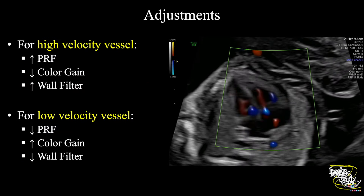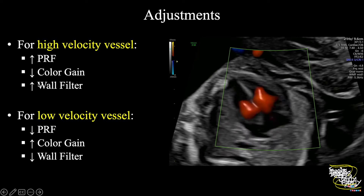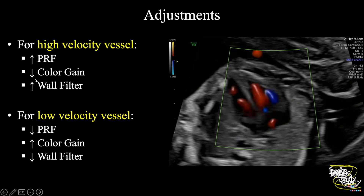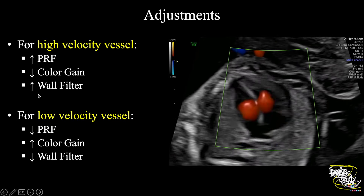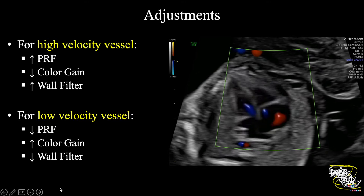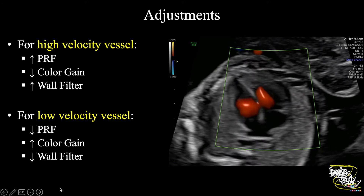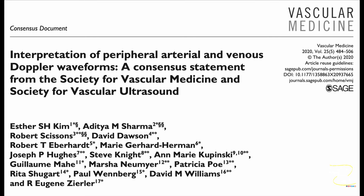In summary, these adjustments will be helpful. If you see a high velocity vessel, try to increase the PRF, decrease the color gain, and you can also adjust the wall filter by increasing it.